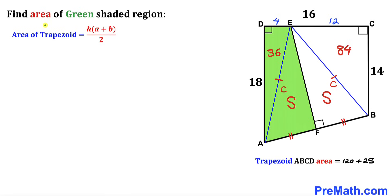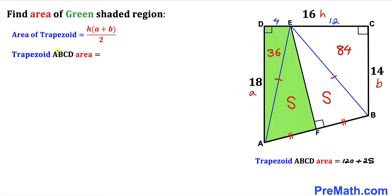Now recall the area of a trapezoid formula: Area = H × (A + B) / 2. In our case, height H is 16, base A is 18, and base B is 14. So the area = 16 × (18 + 14) / 2 = 16 × 32 / 2 = 256 square units.